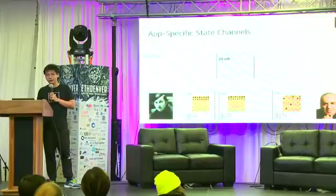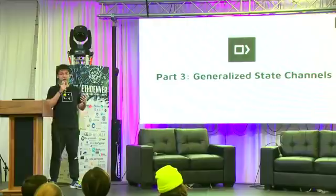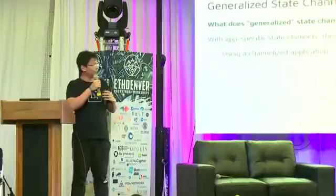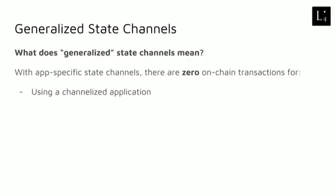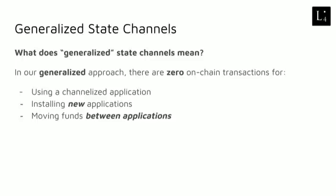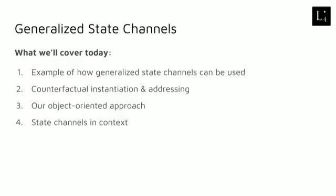Now I move on to talking about generalized state channels. What does the word generalized mean in this context? In the app-specific state channel I was just going through, we had zero on-chain transactions for using the application — that is, for every chess move that was played, we do not need to submit an on-chain transaction. But when we want generalized state channels, we want to continue having this property of zero on-chain transactions for using an application, but we also want zero on-chain transactions for installing new applications, as well as moving funds in between applications.